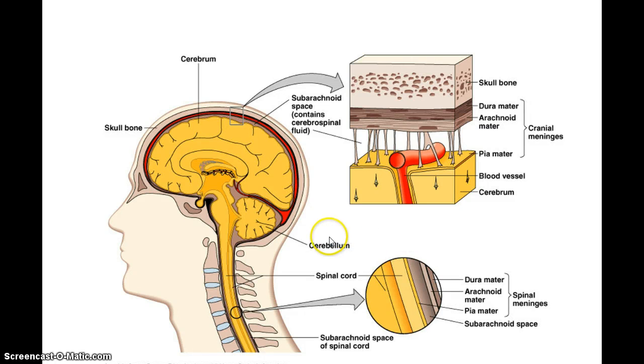So again, that is the meninges. Dura mater, here, epidural space would be up above here. Then you have the arachnoid mater, then you have the subarachnoid space, again, cerebrospinal fluid, and the pia mater is the layer of the meninges that's attached to the brain.